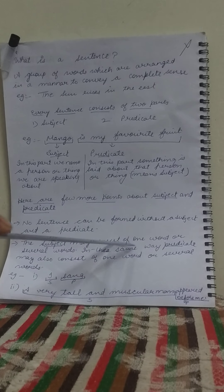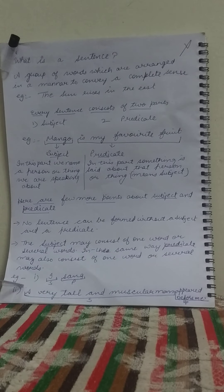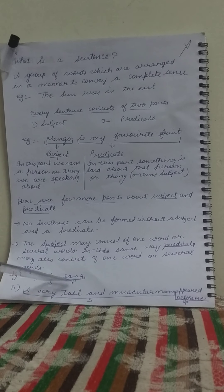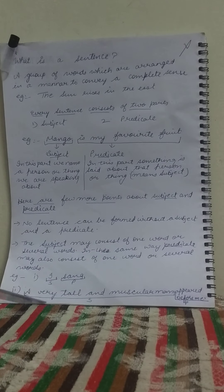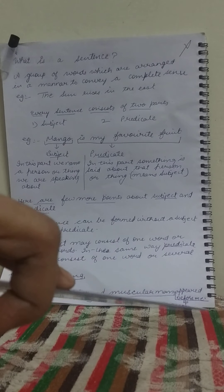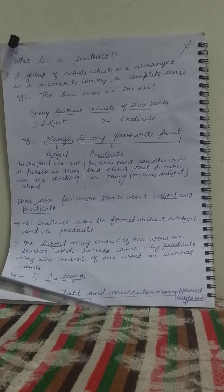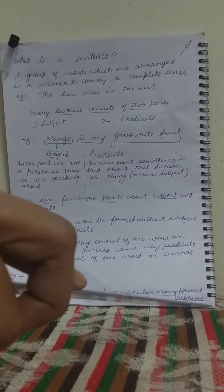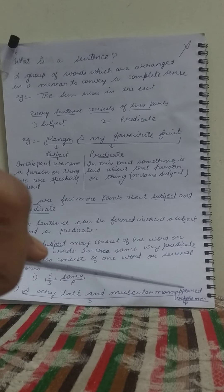The second point is: the subject may consist of one word or several words, and in the same way, the predicate may also consist of one word or several words. For example, 'I sang' — here 'I' is the subject and 'sang' is the predicate, just one word each. In the second sentence, 'a very tall and muscular man appeared before me' — 'a very tall and muscular man' is the subject and 'appeared before me' is the predicate, both consisting of several words.